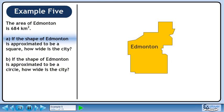The area of Edmonton is 684 square kilometers. In Part A, if the shape of Edmonton is approximated to be a square, how wide is the city?